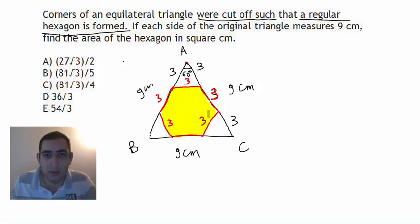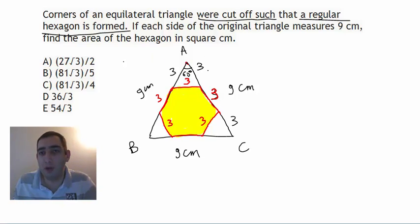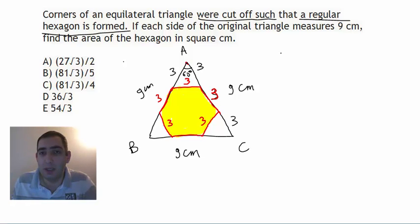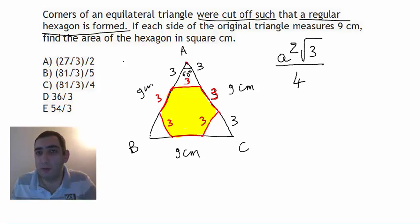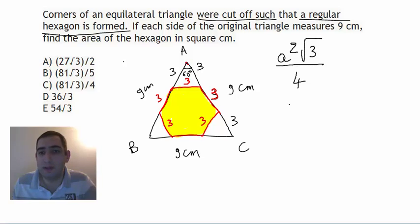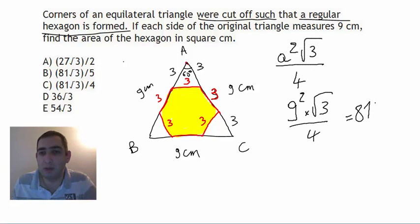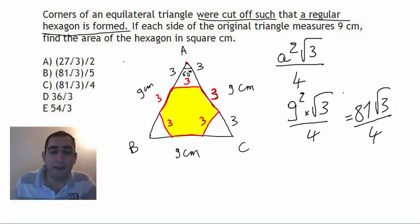The area of an equilateral triangle is equal to a² times √3 divided by 4 — a formula you need to know for the GMAT. For the large triangle, a = 9, so the area is 9² × √3 / 4, which equals 81√3 / 4.